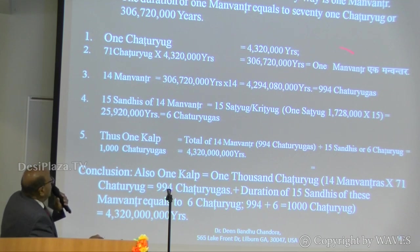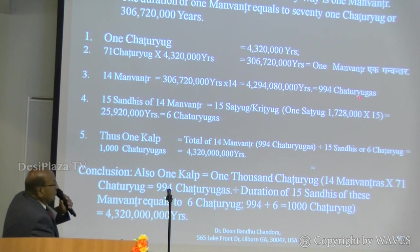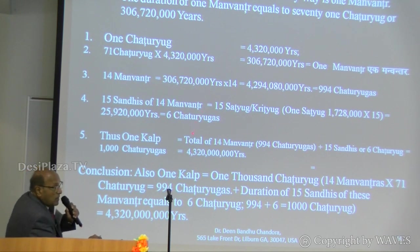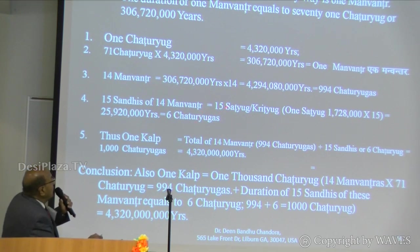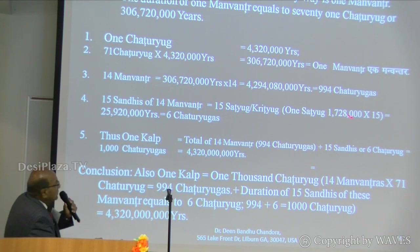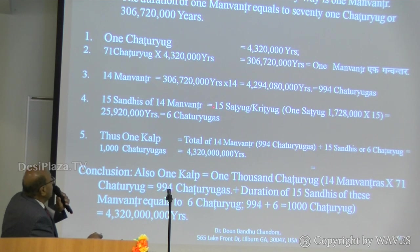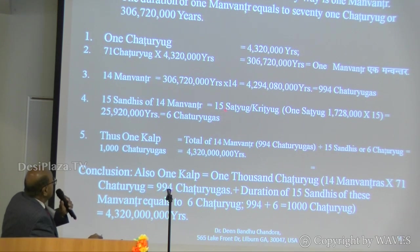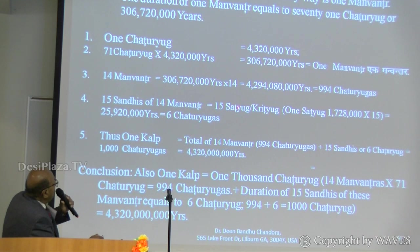Now, 14 Manvantaras makes 994 Chatur Yugas. Each Manvantara is followed by a so-called Jal Plava — meaning inundation, a deluge of the whole Earth. So one Manvantara, with one Sandi before and one Sandi after, totals 15. Sat Yuga and Krita Yuga is added to make it six Chatur Yugas.